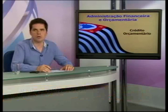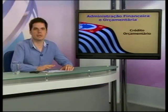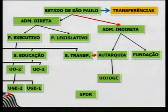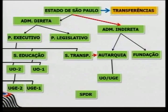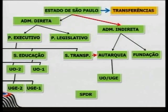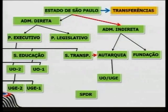No organograma do Estado de São Paulo, temos o Estado como órgão superior, com transferências previstas na LOA para outros entes. Há indicações de recursos para a administração indireta, mas o foco aqui é a administração direta. Dentro dela temos os poderes — Executivo e Legislativo. No Poder Executivo estão as secretarias e PGE como órgãos setoriais. O órgão central normatizador desse processo é a SPDR.